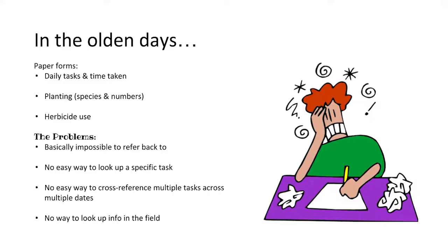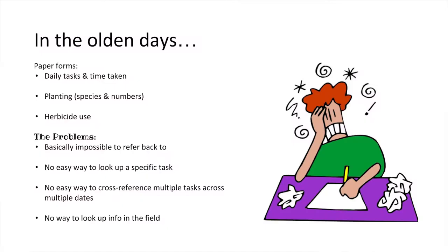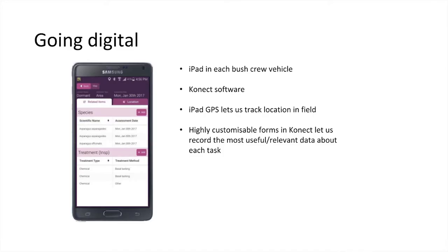Prior to using Connect, our method for recording works was writing it down on paper. We had forms for recording tasks, how long they took, our plantings, and herbicide use. But in practical terms it was nearly impossible to refer back to that information meaningfully. Finding a specific task from months ago meant sorting through reams of paper, cross-referencing for things like monthly herbicide use required even more searching with a calculator, and we couldn't access any of it in the field since it was all stored back at the office.